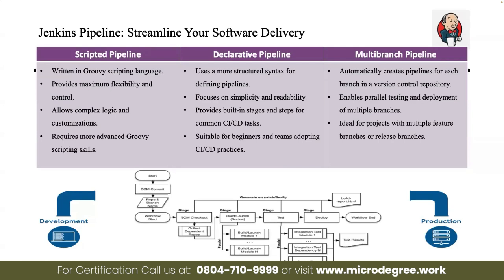This is a multi-branch pipeline. Multi-branch pipeline is used for multiple stages. For example, if you look at WhatsApp — the WhatsApp software build — you need to test for Android, Apple OS, and Windows OS, for multiple operating systems. These multi-stages and multi-branch requirements are what multi-branch pipelines are used for. It's a sophisticated engineering setup, but still good to know.